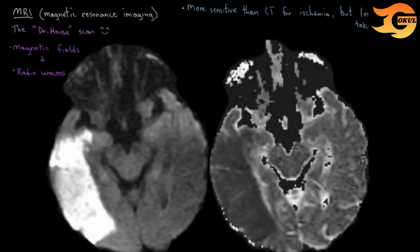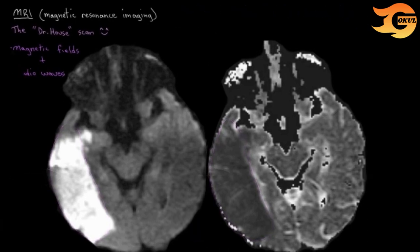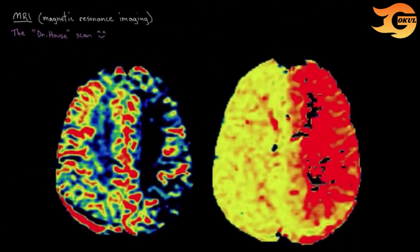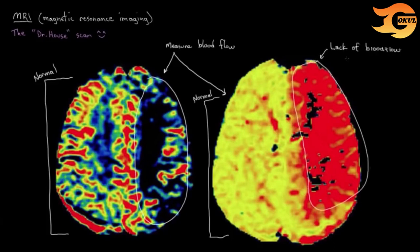Remember how it can take up to almost a day for brain changes to appear on a CT scan? That's not the case with MRI. These images were taken a mere half hour after the patient started having stroke symptoms — just incredible. You can see there's already ischemic brain changes happening in the right MCA territory. The next set of images measures blood flow through the brain: the right half is normal, but on the left there's a lack of blood flow, suggesting a clot in the left middle cerebral artery. These were taken only an hour after symptom onset, showing how quickly MRI can detect stroke.